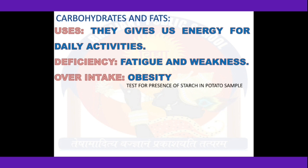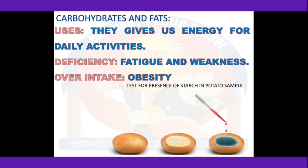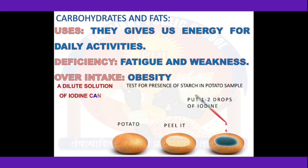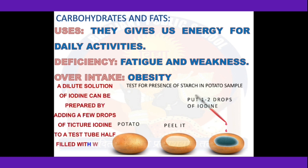We can test whether a substance contains starch by performing a simple experiment. Take a potato as a sample food item, peel it, and then add one or two drops of iodine solution over it. As soon as you add the iodine solution, its brown color will turn to blue-black color. This blue-black color shows the presence of carbohydrates — specifically starch — in the potato. You can do the same test with rice, wheat chapati, or any other grain.